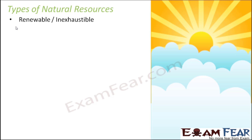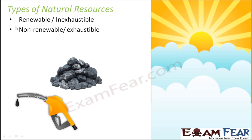Broadly, natural resources are of two types: renewable or inexhaustible, and non-renewable or exhaustible. Renewable means something that can be used over and again — it is continuously available and never runs out. One such example is air: we breathe air in, we breathe air out, and air is always present around us. Inexhaustible means something which doesn't get exhausted.